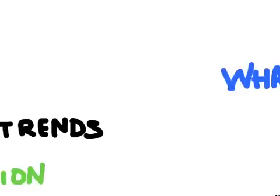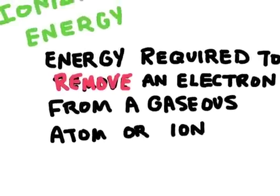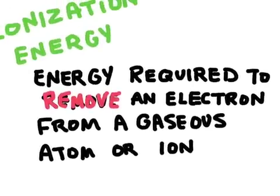So let's start with what is ionization energy. Ionization energy is the energy required to remove an electron from a gaseous atom or ion. Now we're not just talking about the atoms that are gases at room temperature, but this is for all elements on the periodic table. We just have to turn the element into a gas first before we can remove the electron.